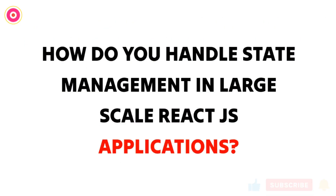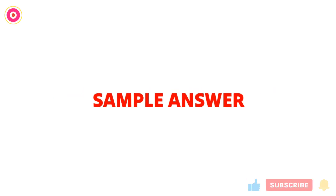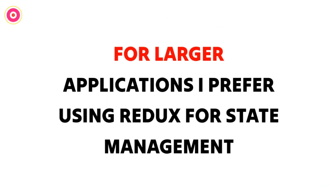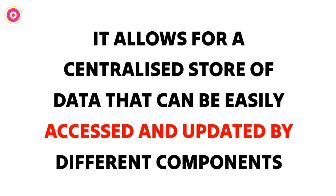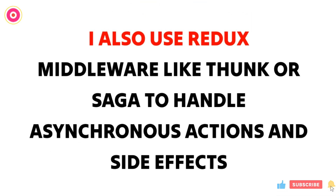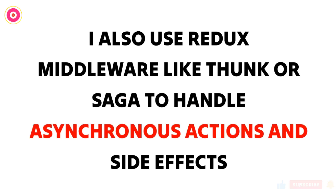Question four: how do you handle state management in large-scale React JS applications? Sample answer: for larger applications I prefer using Redux for state management. It allows for a centralized store of data that can be easily accessed and updated by different components. I also use Redux middleware like Thunk or Saga to handle asynchronous actions and side effects.